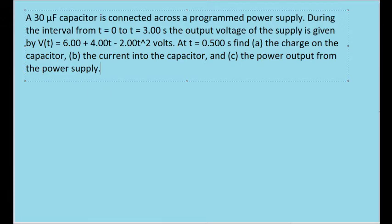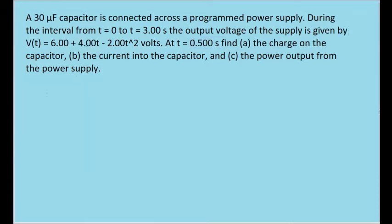So, I'm going to take this function here, 6 plus 4t minus 2 times t squared, and then plug this value, 0.500 seconds, into t. And what we get as a result of that is we find that the voltage at that point in time, at 0.500 seconds, is about 7.5 volts.